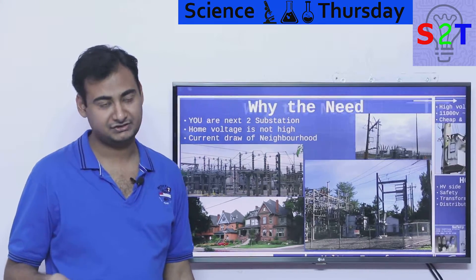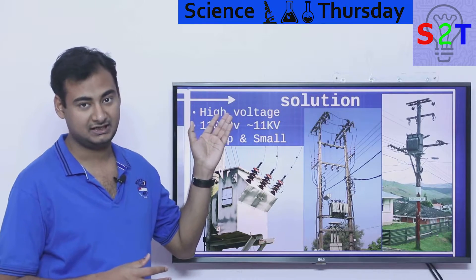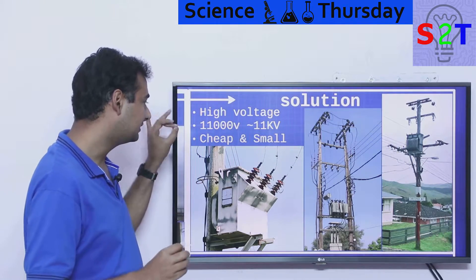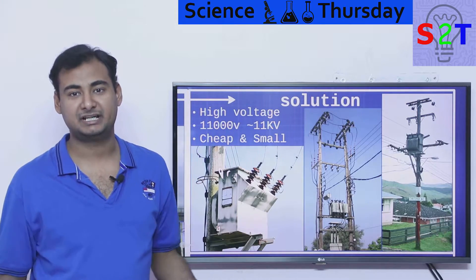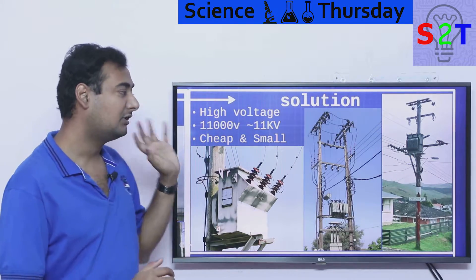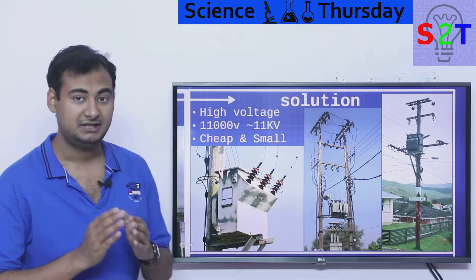That is why we need miniature substations. The solution is basically high voltage, or in terms of electricity we call it medium voltage - generally 11,000 kV. That's the maximum rate in your country. It may be 9,000 in some places, it may be 7,000, but generally it's upwards of 11 kV.